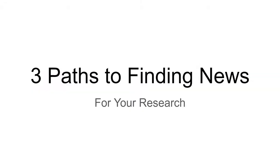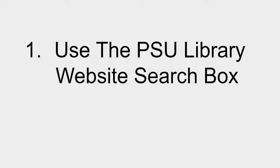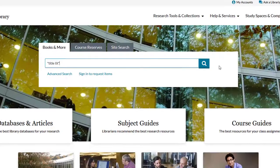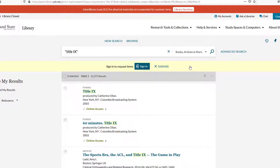This video demonstrates three paths to finding news items for your research. First, you can use the PSU Library website to search for news items. Enter your search terms in the search box and click enter. For this example, I'll be searching for information about Title IX.